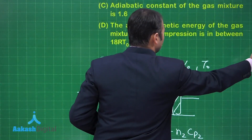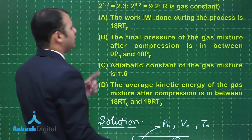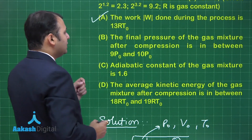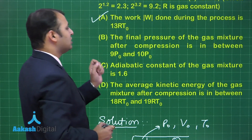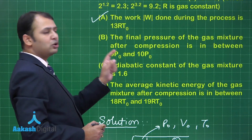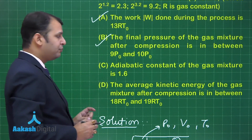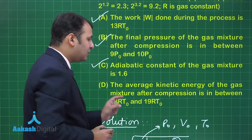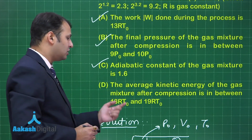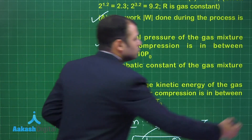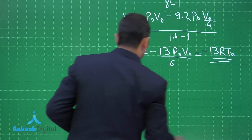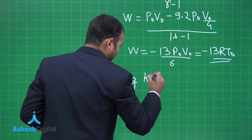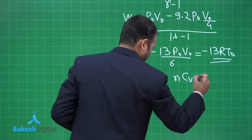Checking the options: option A — work done magnitude is 13RT₀ — yes, correct. Option B — final pressure is between 9P₀ and 10P₀ — yes, correct since it is 9.2P₀. Option C — adiabatic constant of the gas mixture is 1.6 — yes, correct. For option D, we still need to find the average kinetic energy at the final state, which equals n·Cv·ΔT.